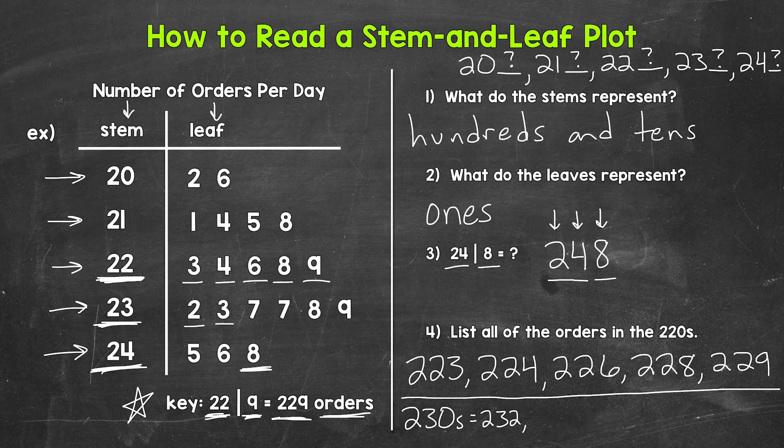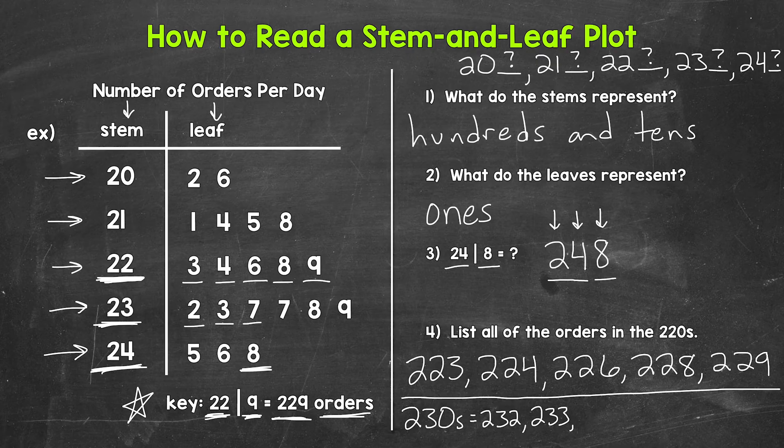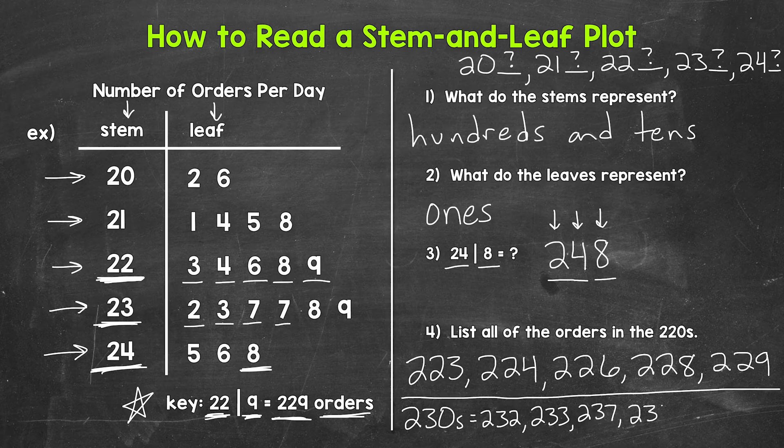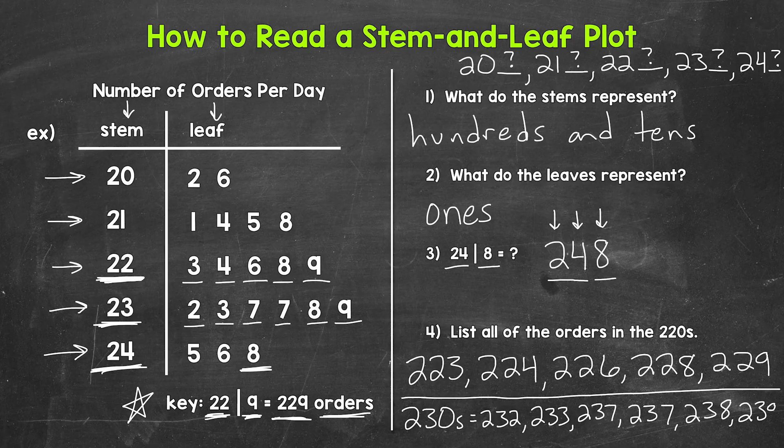Then we have the leaf of three, so 233. Then the leaf of seven, so 237. Another seven, so 237. Then an eight, so 238. And then lastly a nine, so 239.